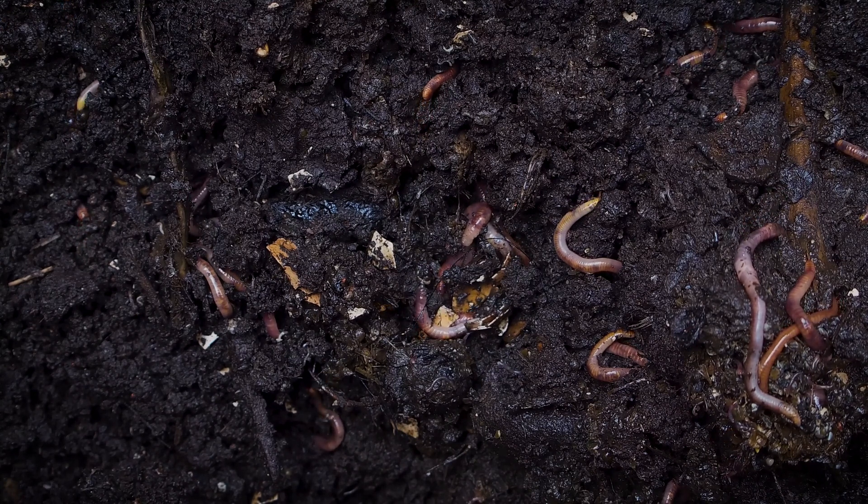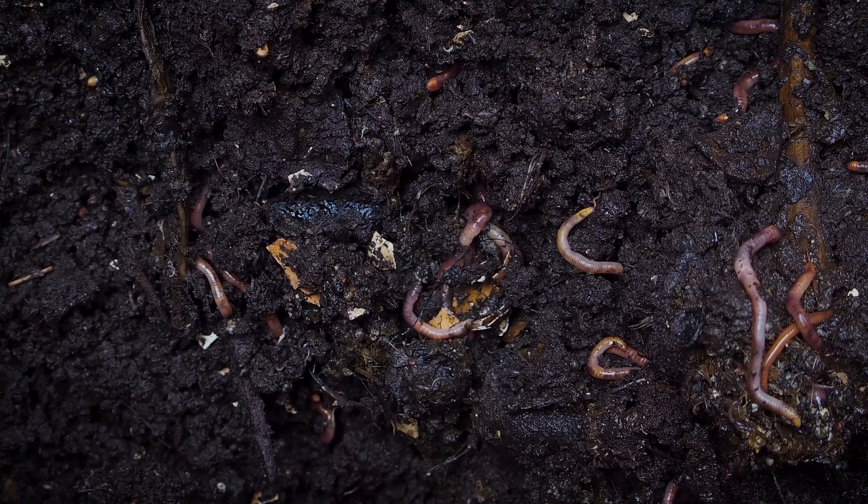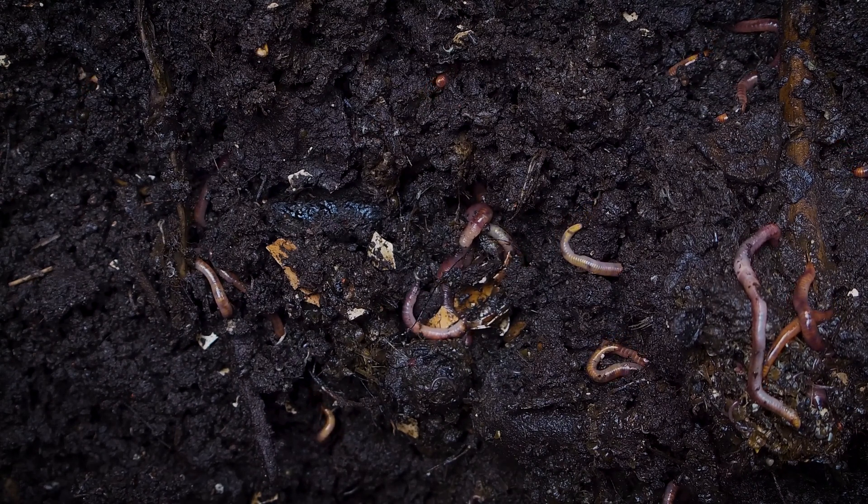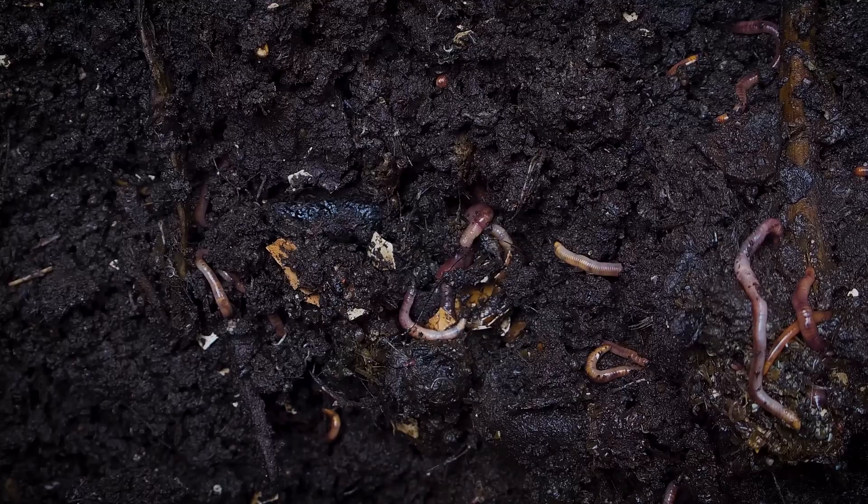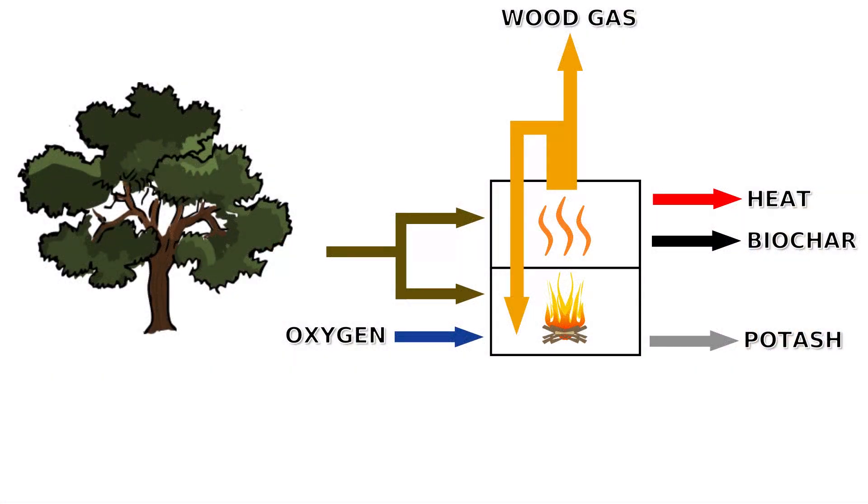Potash, also known as ash, is produced as well. This product is high in potassium, which is a key fertilizer. Both the biochar and the potash can be returned to where the feedstock is grown, completing the cycle and improving soil quality.